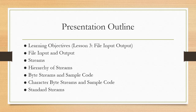The outline includes streams and its hierarchy, the byte streams, byte input stream, byte output stream, and sample code for IO. In character streams, we are going to use the reader class for input and the writer class for output. We are going to see sample code for reading and writing files. Standard streams are also discussed with a sample code illustration.